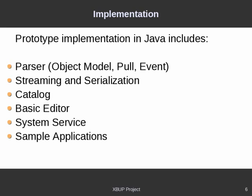The prototype implementation of the protocol is developed in the Java programming language. It covers testing classes for various parser approaches, streaming, serialization, and basic catalog functions. There are also various testing applications available, namely a basic editor allowing usual operations with document tree structure and data content. There is also a system service providing a local copy of the catalog and methods for performing various data transformations.